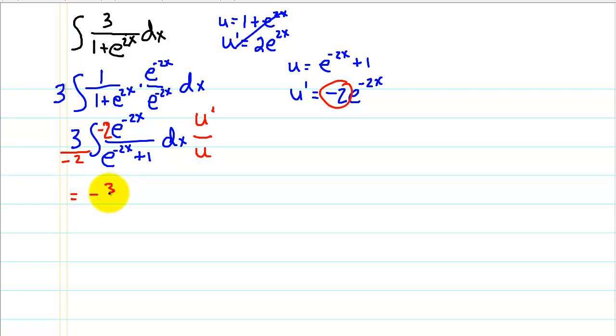So we have negative 3 halves times the natural log of our denominator plus c. So again, the trick here when our u and u prime didn't work out was to multiply top and bottom by e to the opposite power that we had in the denominator. Now let's look at a second example.